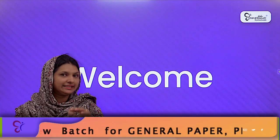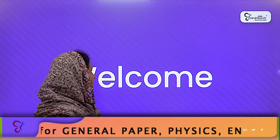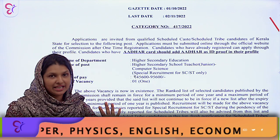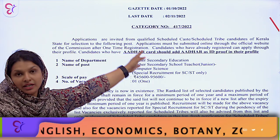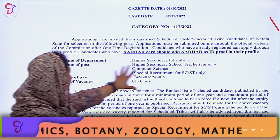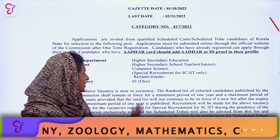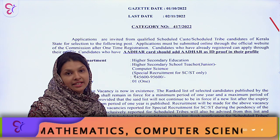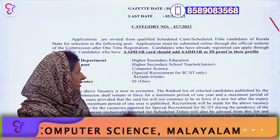We will take the notification. This is the notification. This is category number 417-2022. We have to look at the exam. This is the same as the student.